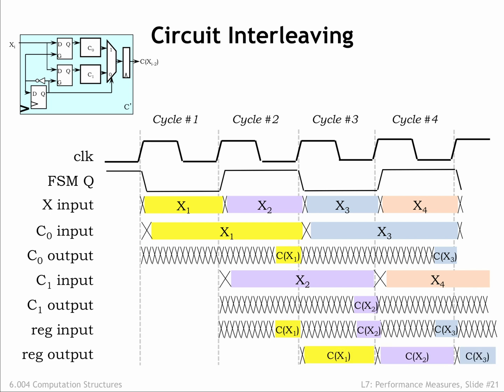Finally, at the rising edge of the clock, the output register captures the value on its input and holds it stable for the remainder of the clock cycle. The behavior of the interleaving circuit is like a two-stage pipeline. The input value arriving in cycle I is processed over two clock cycles, and the result becomes available on cycle I plus 2.